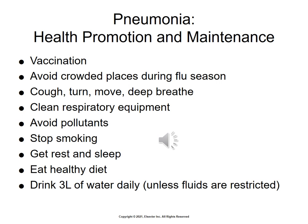Pneumonia health promotion and maintenance: you should review the box on page 571 for preventing pneumonia. Prevention strategies include vaccination. National patient safety goals set by the Joint Commission recommend that nurses encourage older adults 65 or older, or those with chronic health conditions, to receive immunization against pneumonia. For inpatients, the Joint Commission also recommends checking the pneumonia vaccine status and offering the vaccine during the inpatient stay. Additional strategies include avoiding crowded places during flu season, encouraging coughing, turning, moving, deep breathing, and incentive spirometer use, cleaning respiratory equipment, smoking cessation, adequate rest and sleep, a healthy diet, and maintaining adequate hydration.